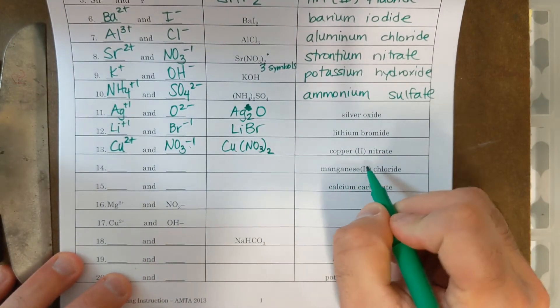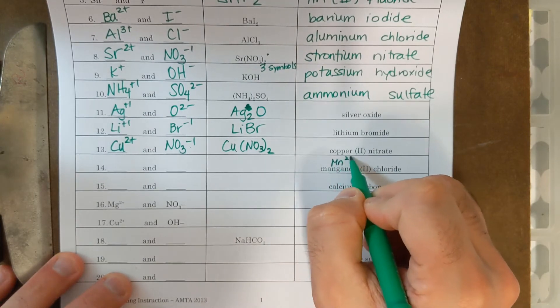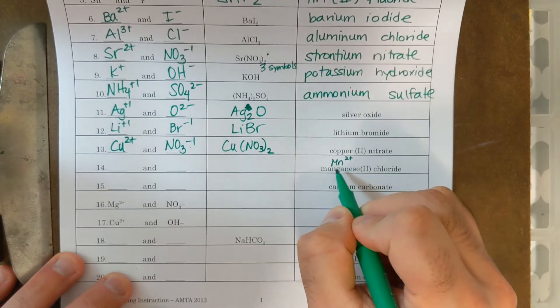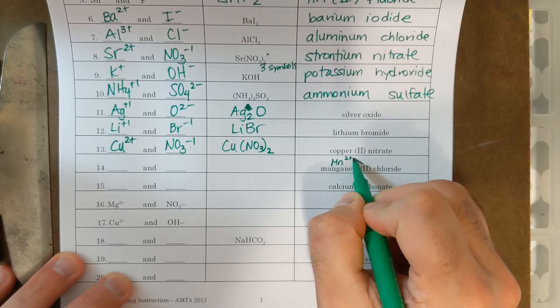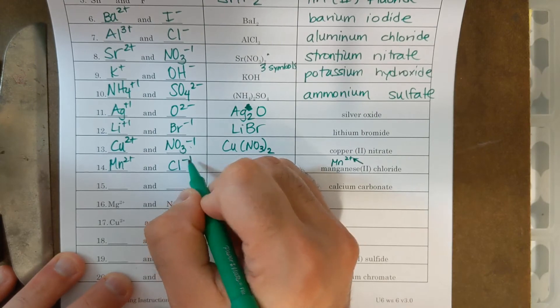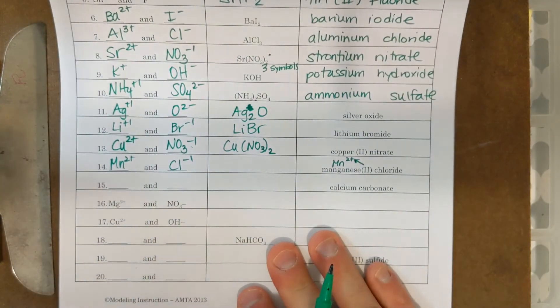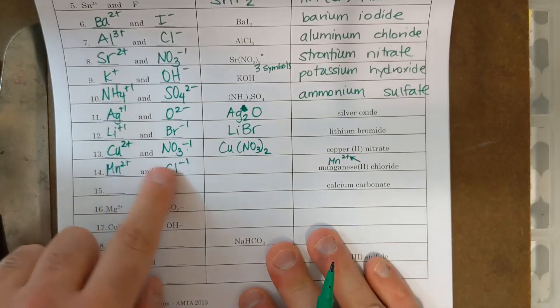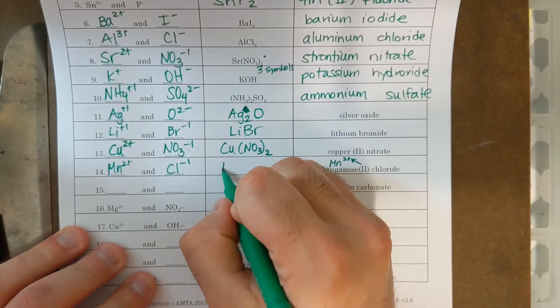Next one is manganese, two, Roman numeral two, chloride. Manganese is MN, and Roman numeral two means two plus, so I put that over here, MN two plus. Chloride is Cl minus one. If I want to write this formula and do the crisscross method, I'm going to need two chlorines for every one manganese.